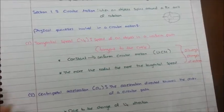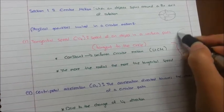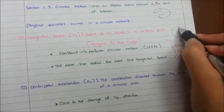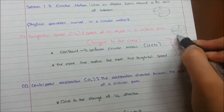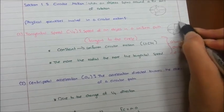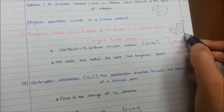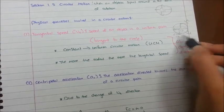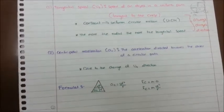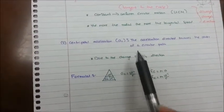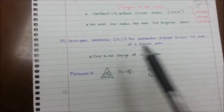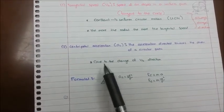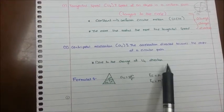The Vt always changes direction. Now, our second physical quantity is centripetal acceleration, which is AC. AC is the acceleration directed towards the center of the circular path. It is due to the change of Vt direction.